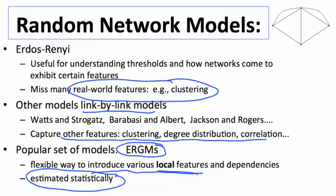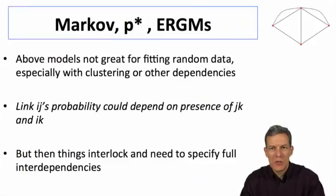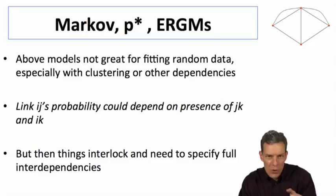There's a lot that's known about the exponential family, and we can then take those to data and actually try to estimate things and do statistical estimation to say, is a given social network exhibiting a statistically significant number of triangles? Is this really different from not seeing any triangles at all? These models have been called Markov models, p-star models, now they're best known as exponential random graph models or ERGMs. The previous models were not great at fitting data.